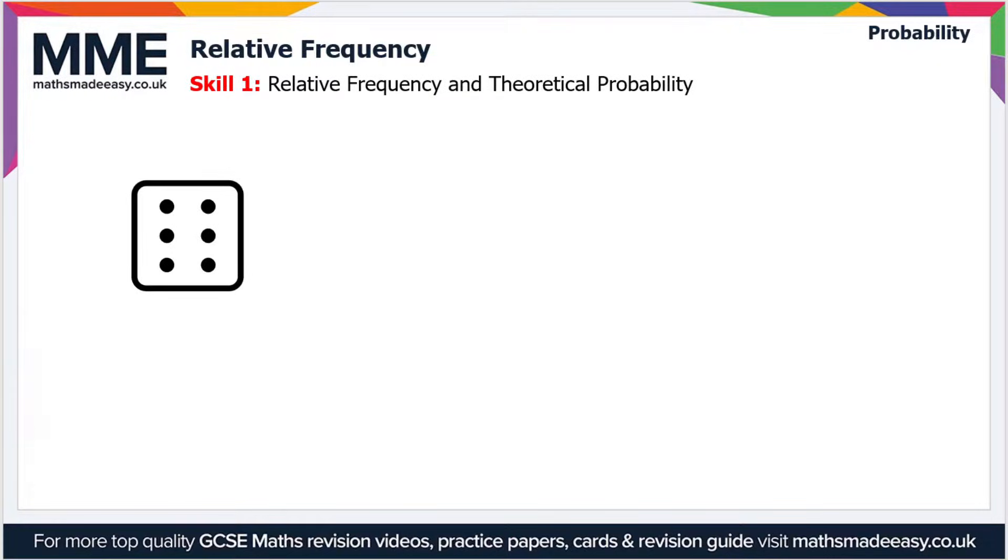So the first concept we'll look at is relative frequency and theoretical probability. Now there are two types of probability here. Theoretical probability is the probability that you would expect of an event happening. So for instance, if I have a dice here and I want to know the probability of rolling a six,